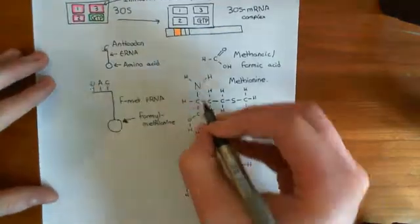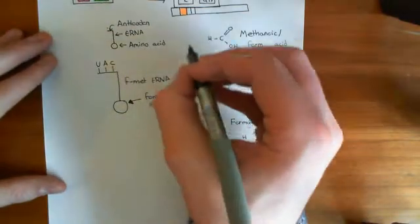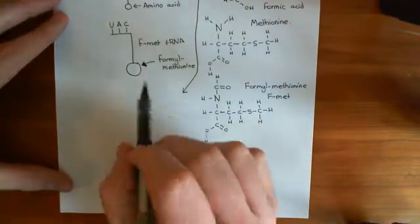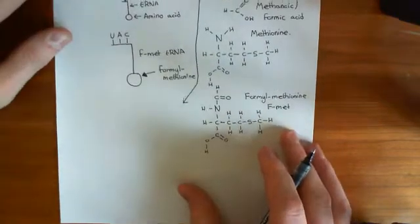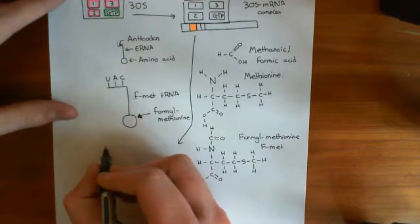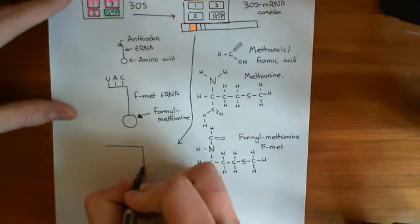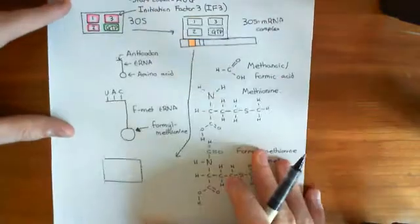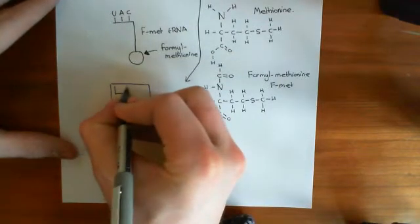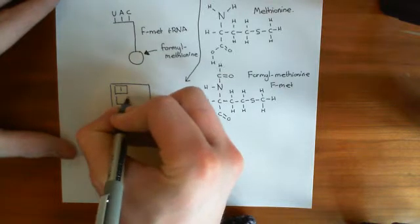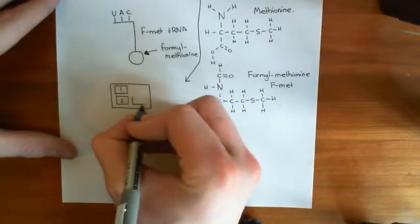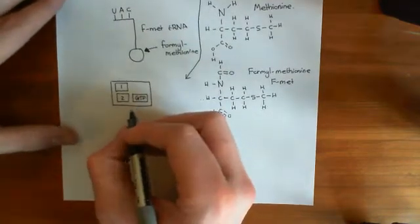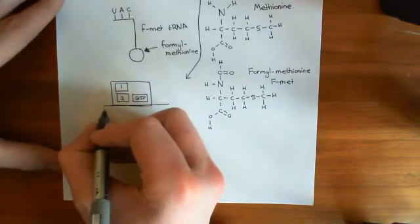So we're going to bring in this tRNA. The next step is we're going to bind our formylmethionine tRNA — our fMet-tRNA — to that start codon of our mRNA. When you do this, what happens is initiation factor 3 drops off. So initiation factor 3 is going to drop off when we add the formylmethionine tRNA. It's done its job — it was necessary in order to add the mRNA and the fMet-tRNA, but now it's no longer necessary and it can leave. Initiation factors 1 and 2 and the GTP are still necessary; they are necessary in order for this fMet-tRNA to bind as well.